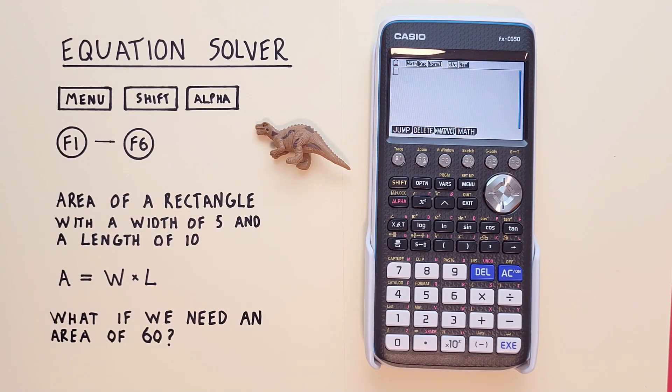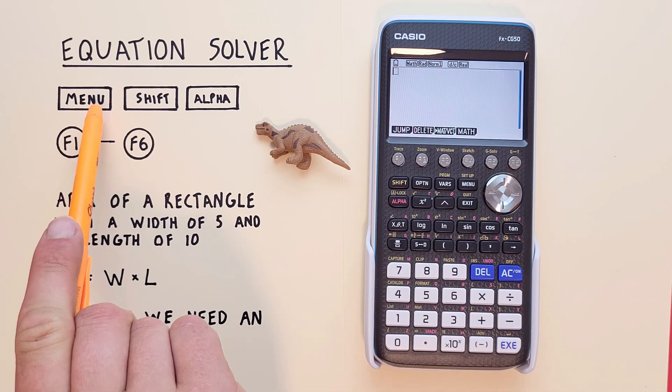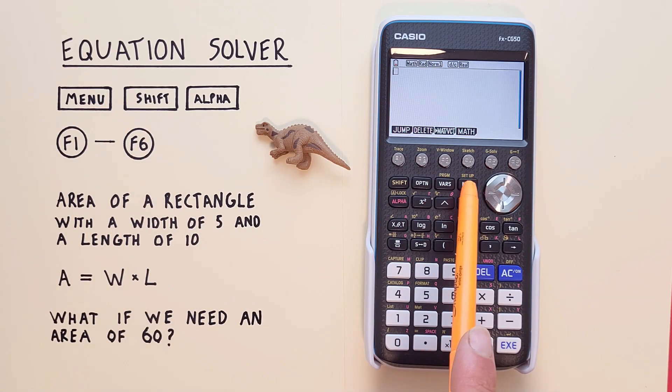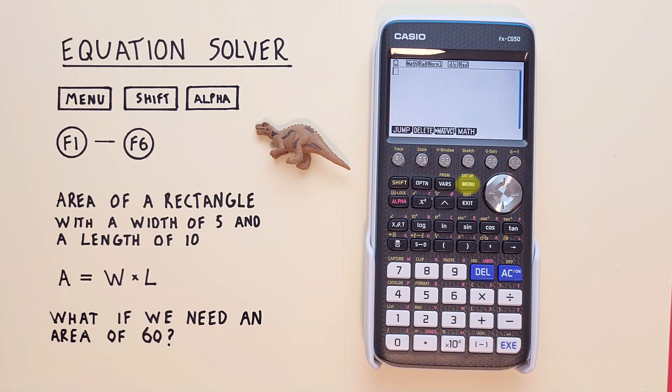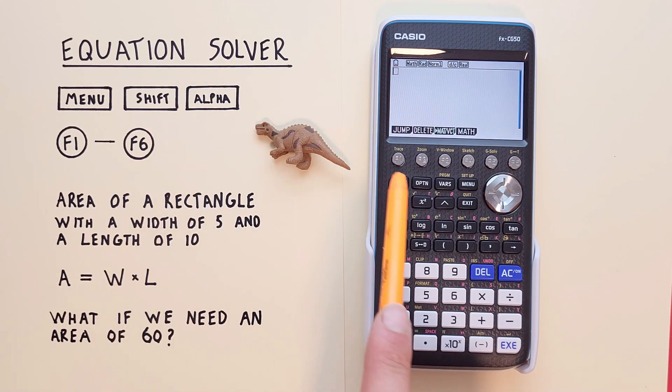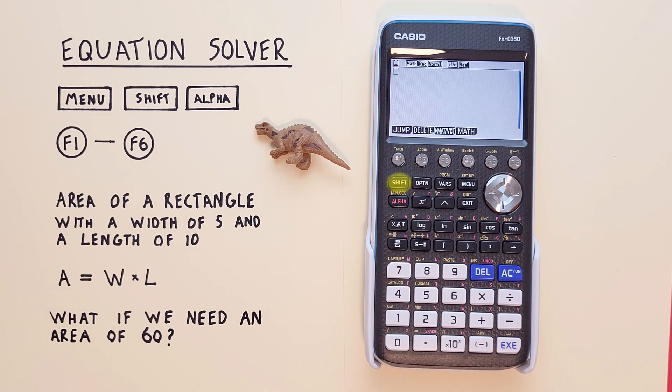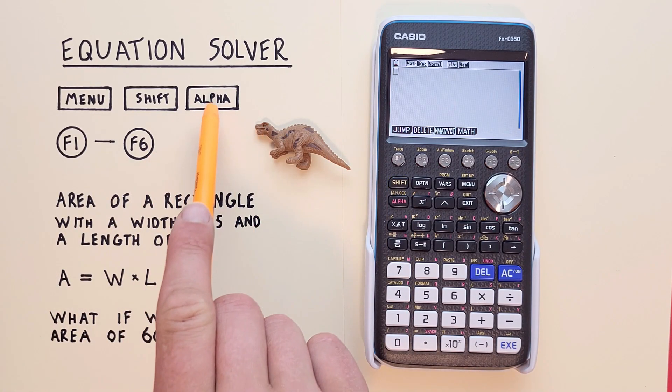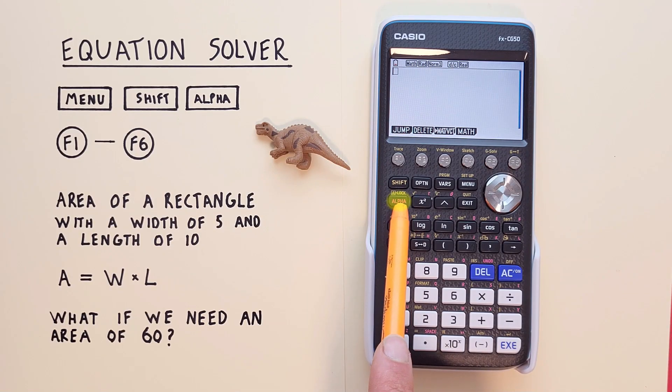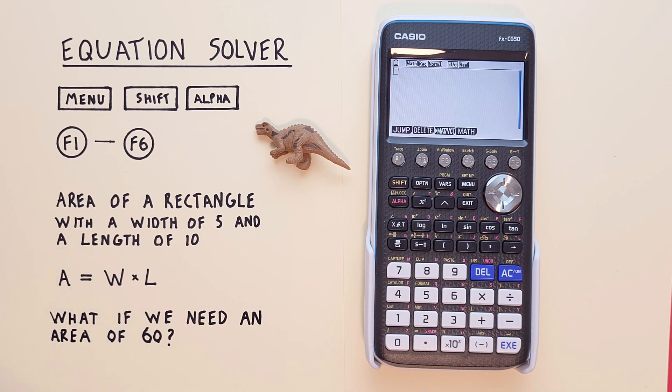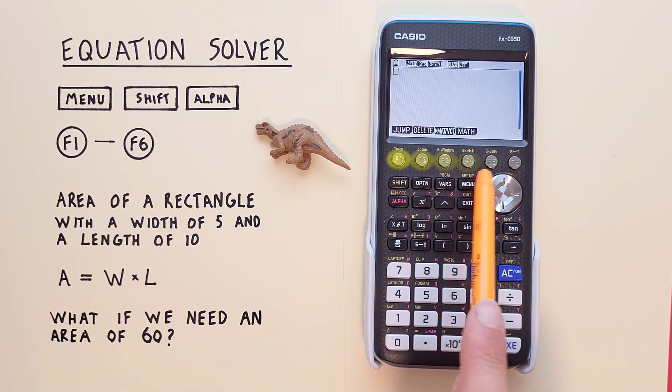To do this we'll use the menu key that looks like this located here, the shift key that looks like this located here, the alpha key that looks like this located here, and the F1 through F6 keys that look like this located across the top here.